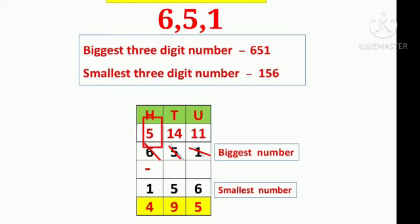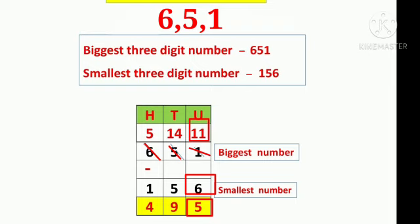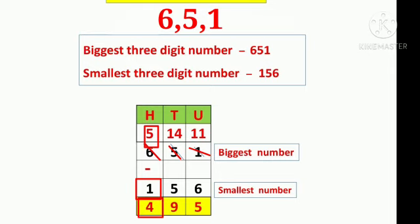Now we have: 5 hundreds, 14 tens, and 11 units. We start subtraction from the units place: 11 minus 6 equals 5 units. Then tens place: 14 minus 5 equals 9 tens. Then hundreds place: 5 minus 1 equals 4 hundreds. Our answer is 495.